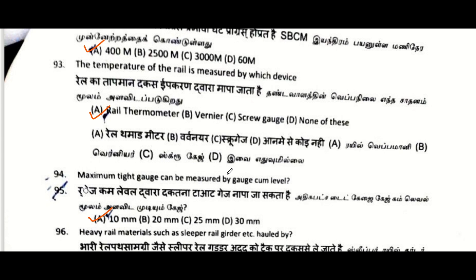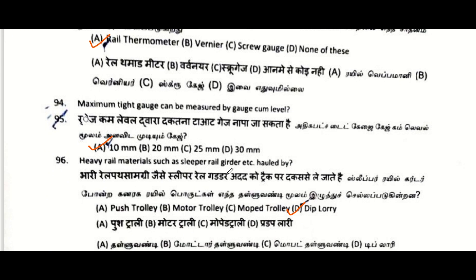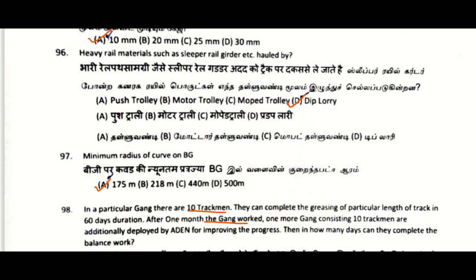The temperature of the rail is measured by which device: rail thermometer. Maximum tight gauge that can be measured by the gauge-cum-level: 10 mm.